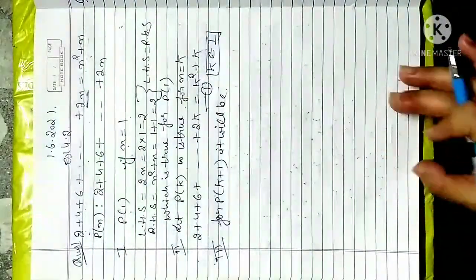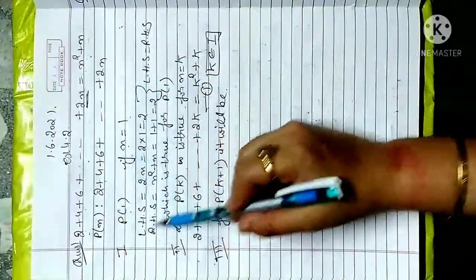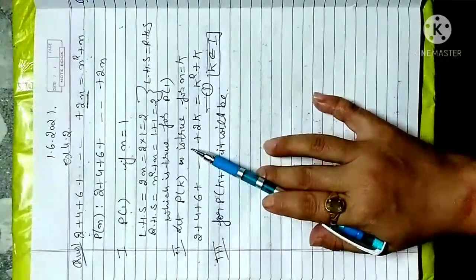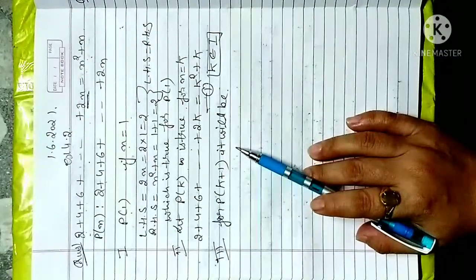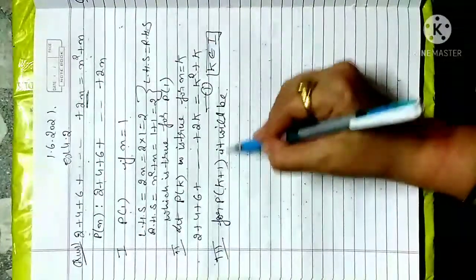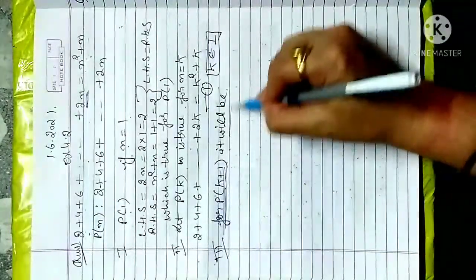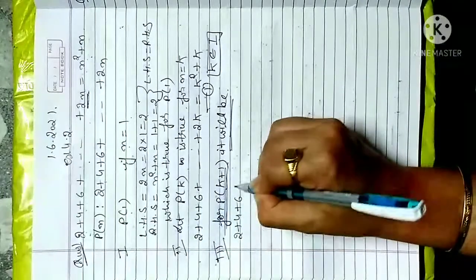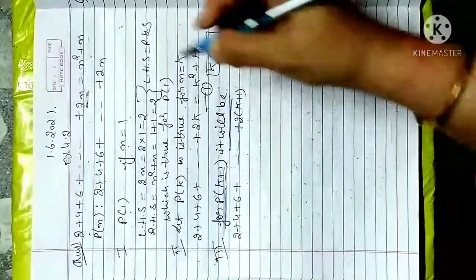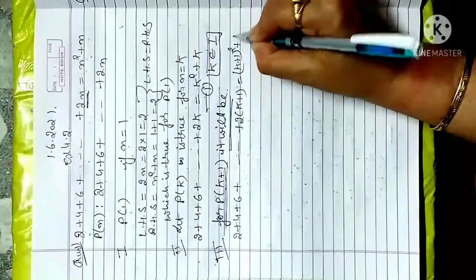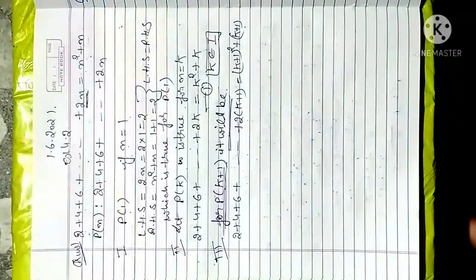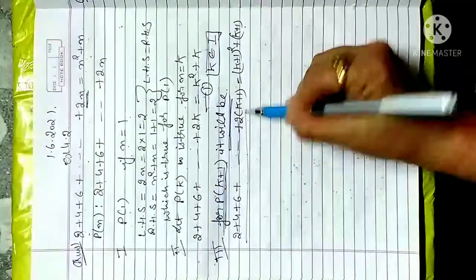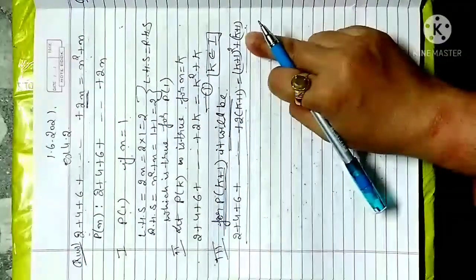Now the third step. Note that if the first step is not satisfied — if left hand side does not equal right hand side — then there is no need to go further with the second and third steps; you can directly write that mathematical induction is not possible. For P(k+1), in place of n we replace k plus 1, so that is 2 plus 4 plus 6 plus ... plus 2(k+1), and on the right hand side: (k+1)² plus (k+1). Both left side and right side replace n with k+1, and we must prove left hand side equals right hand side. First I will pick the right hand side.